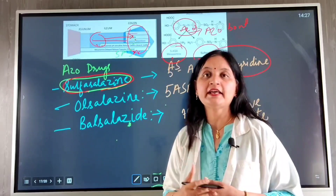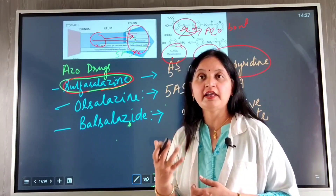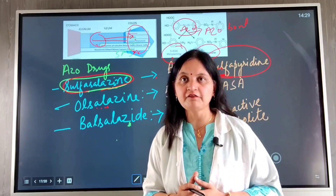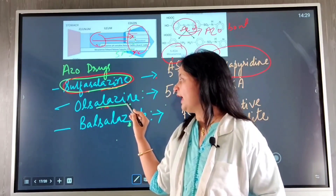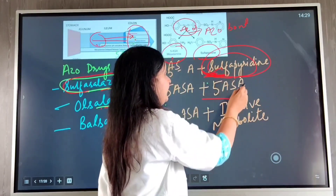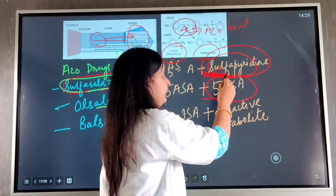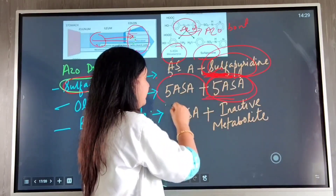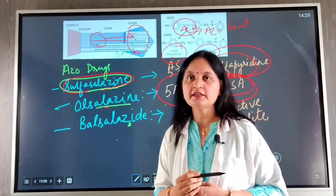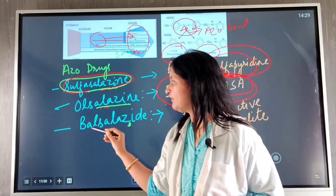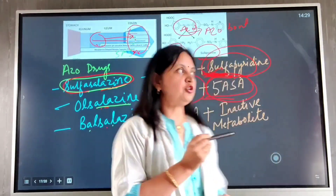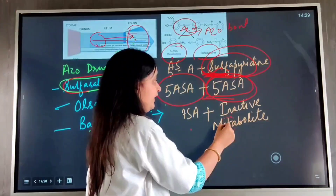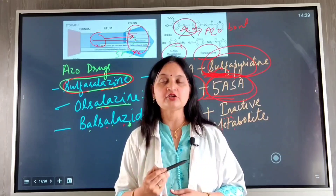Because most side effects are related to the sulfapyridine component, olsalazine has been developed, in which sulfapyridine is replaced by another 5-aminosalicylic acid — both being the active component in ulcerative colitis and Crohn's disease. The third derivative is balsalazine, where 5-aminosalicylic acid is linked to an inactive metabolite, replacing sulfapyridine to reduce its side effects.